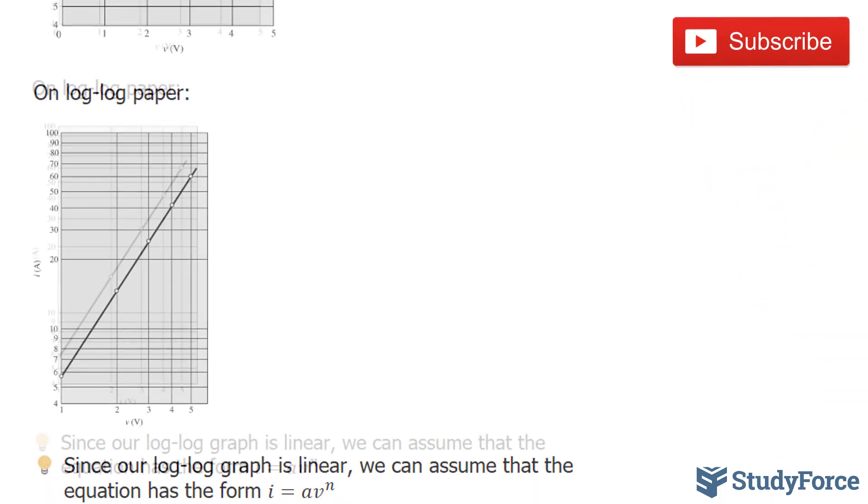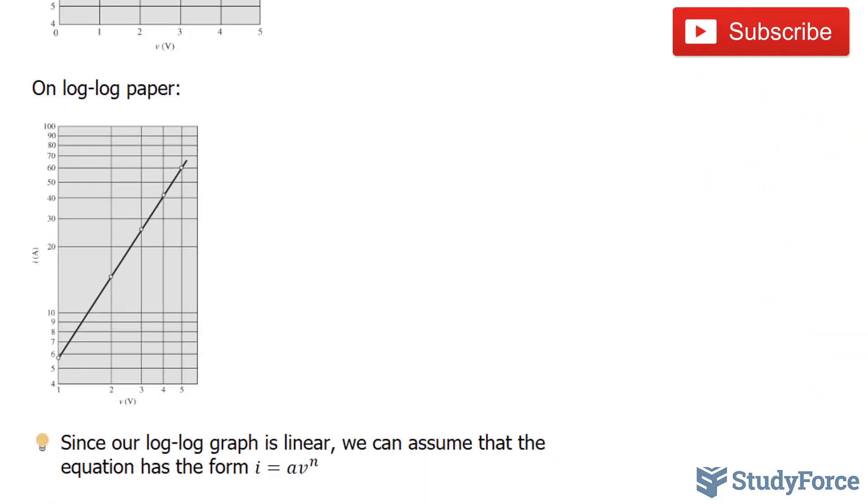And lastly, on pure log paper, since the graph is linear, as you can tell, we can assume that the equation has the form i is equal to a v to the power of n.